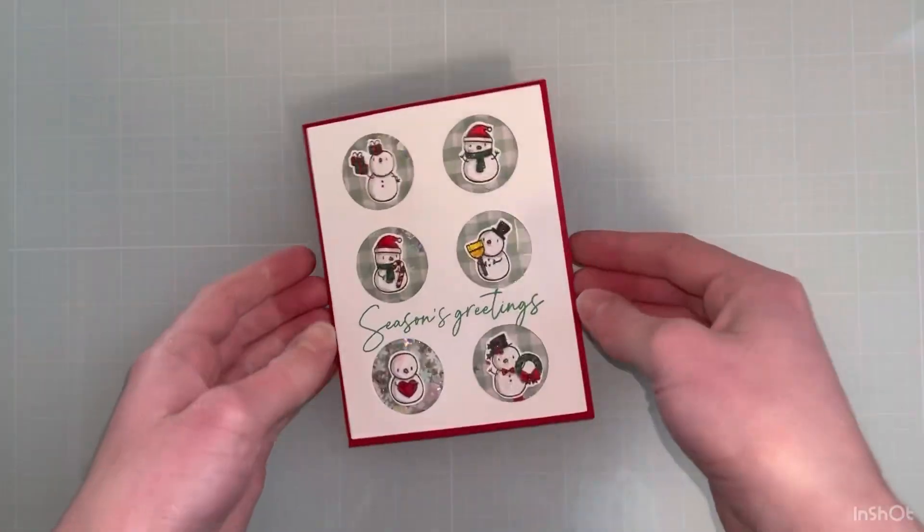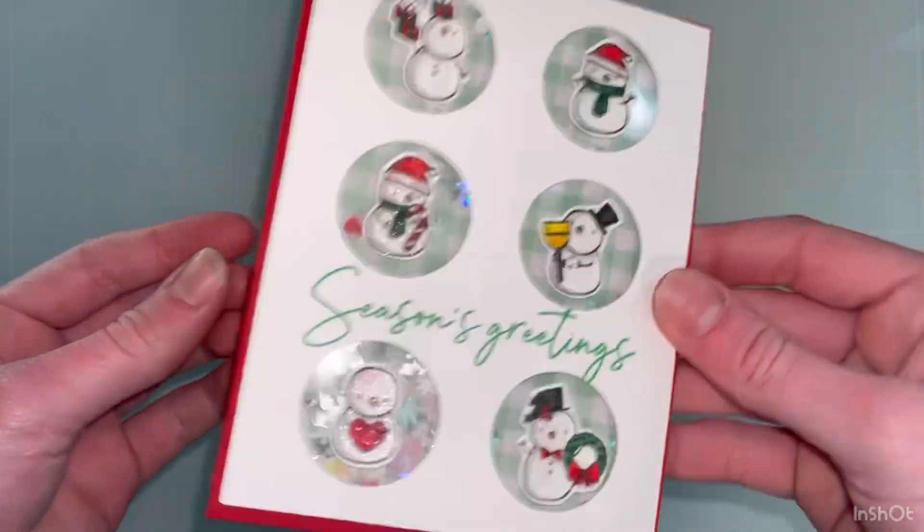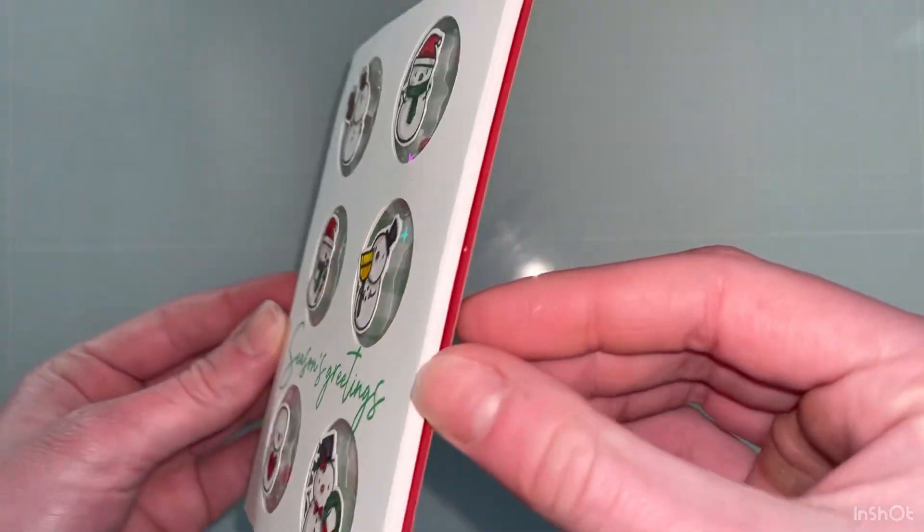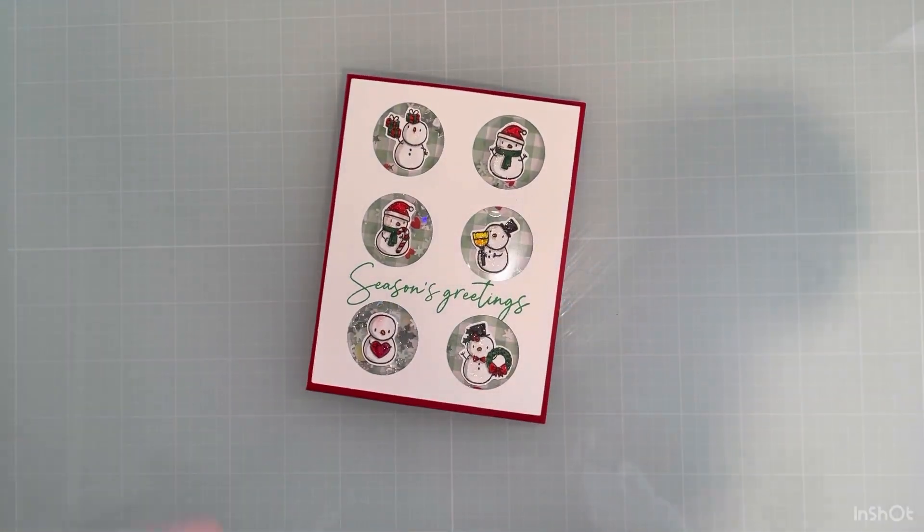And here is the finished card. I will show you up close how it turned out, and you can see all the sparkle on my snowman. You do have to be careful, because you can see that the red bled a little bit, but I think it's okay. Anyway, here is how the card turned out.